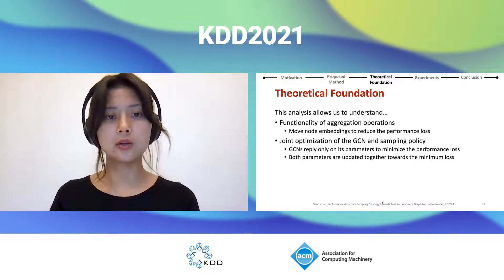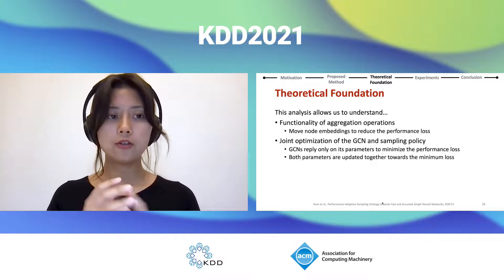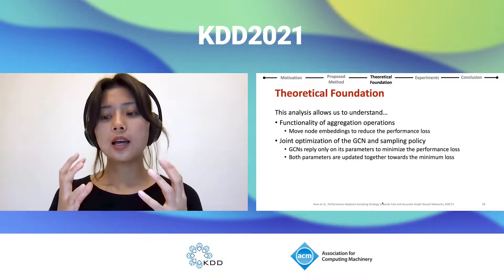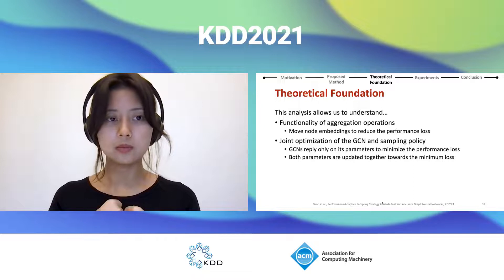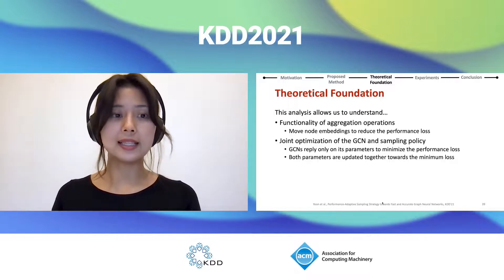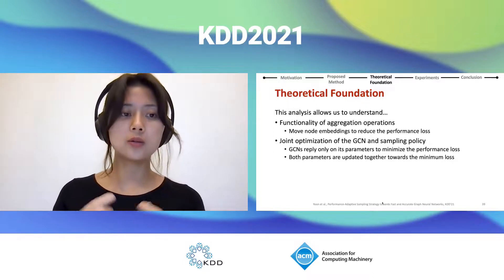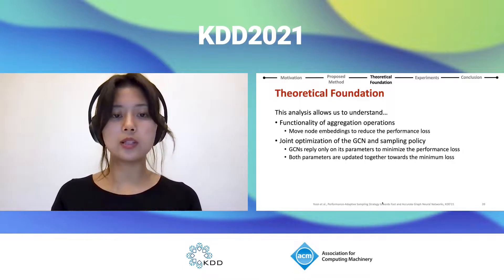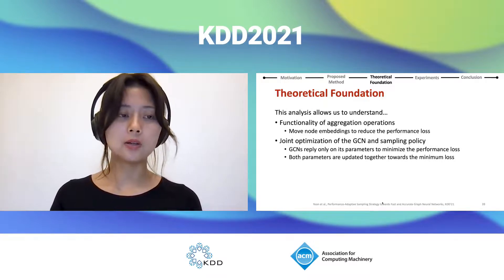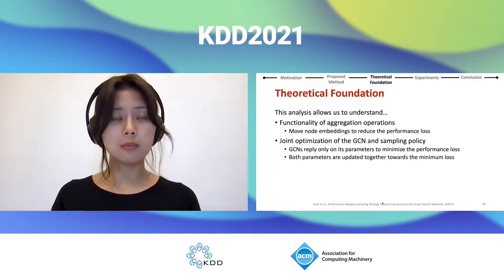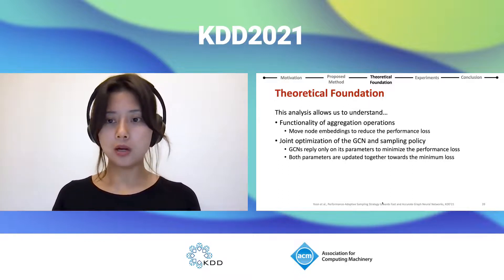This analysis reveals two main insights. First, the functionality of aggregation in GCNs: aggregation not only gathers information from neighbors, but helps move node embeddings to reduce performance loss more easily. Second, it shows the strength of joint optimization of GCN and sampling policy. Previously, GCN relied only on its own parameters to minimize performance loss. Here, because we optimize GCN and sampling policy jointly, both sets of parameters work together to minimize loss and reach the minimum more easily.